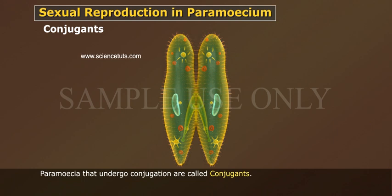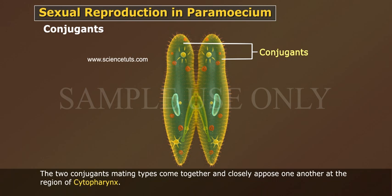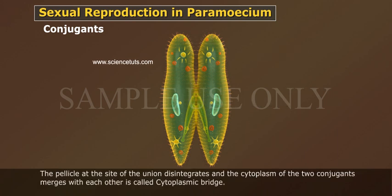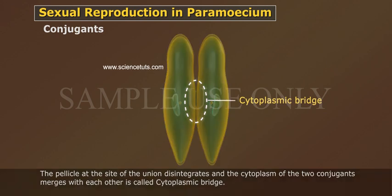Paramecia that undergo conjugation are called conjugants. The two conjugants of different mating types come together and closely oppose one another at the region of the cytopharynx. The pellicle at the site of union disintegrates and the cytoplasm of the two conjugants merges, forming a cytoplasmic bridge.